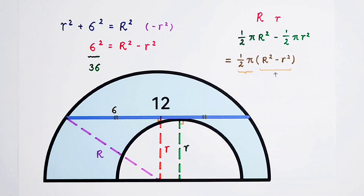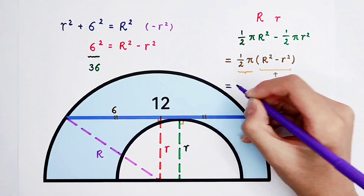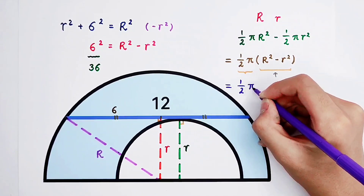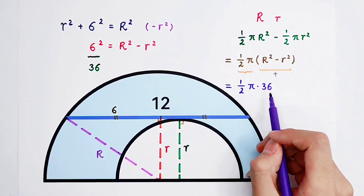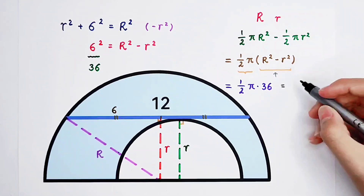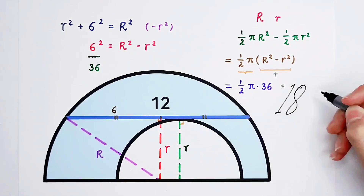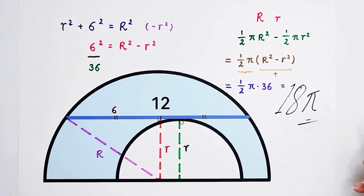Substitute 36 for capital R squared minus small r squared. Our answer is: one-half times pi times 36. One-half times 36 is 18, so the answer is 18π. Do you get it? Subscribe for more videos, give a thumbs up for this problem, and we'll see you next time.